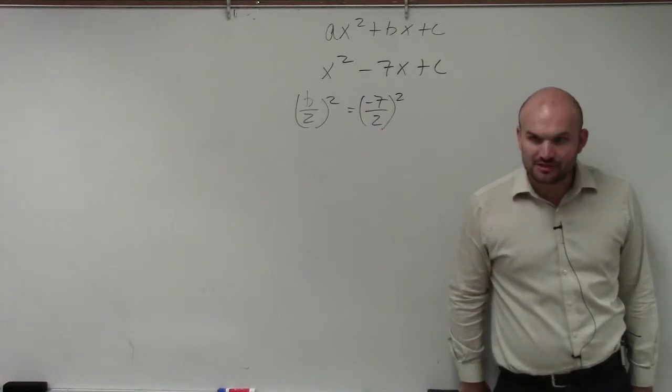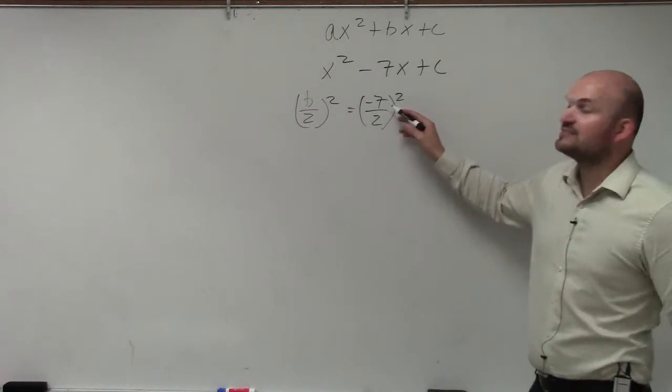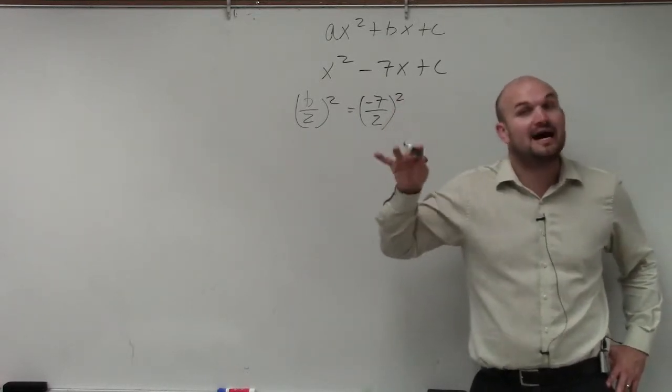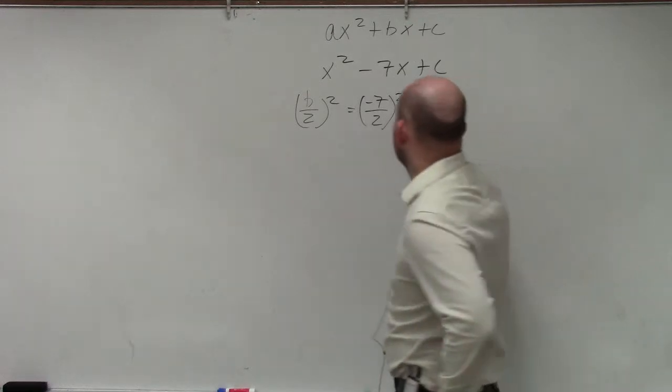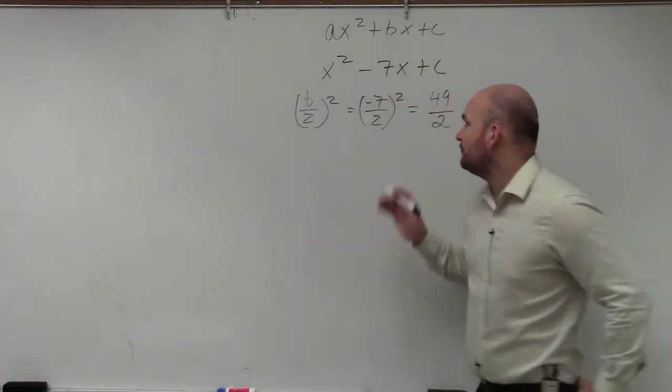So we've got a little issue. Well, we don't have an issue. Do not write it as a decimal, just leave it as is. We can still square negative 7 halves. Negative 7 halves squared is negative 7 halves times negative 7 halves, which is going to give you 49 over 4.